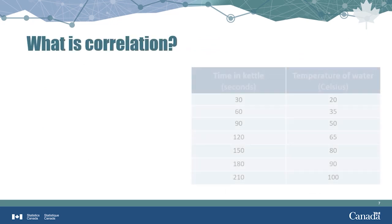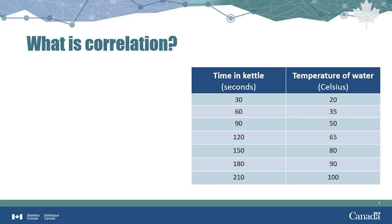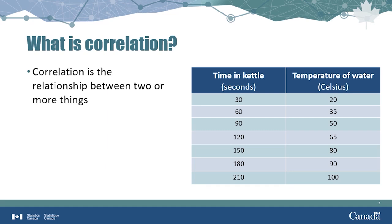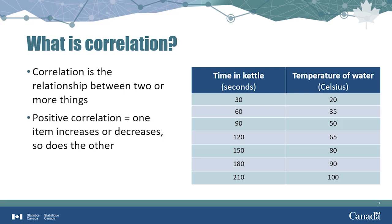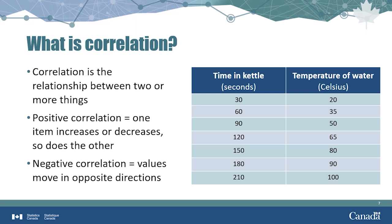Let's start by talking about correlation in everyday life. When we say two or more things are correlated, this means there is a mutual relationship between them. This relationship can be either positive or negative. In a positive correlation, the values of the two related items move in the same direction. For example, the longer the kettle is on, the hotter the temperature of the water inside the kettle will get. In a negative correlation, the values move in opposite directions, meaning as one variable increases, the other decreases and vice versa.